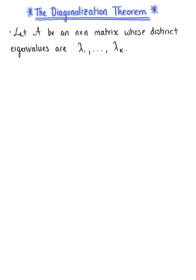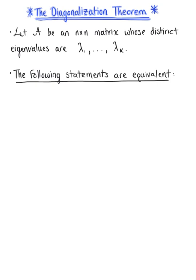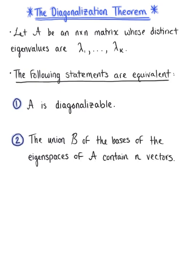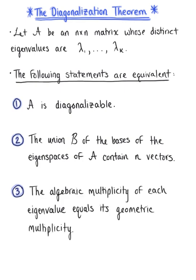Let matrix A be an n by n matrix whose distinct eigenvalues are defined as lambda sub 1 through lambda sub k. The following statements are logically equivalent, meaning they are either all true or all false. First: matrix A is diagonalizable. Second: the union of the bases of the eigenspaces of matrix A contains n vectors. Third: the algebraic multiplicity of each eigenvalue equals its geometric multiplicity.